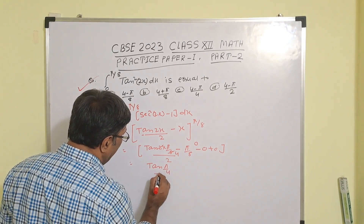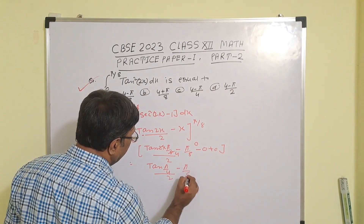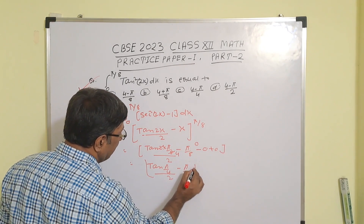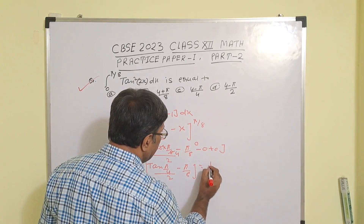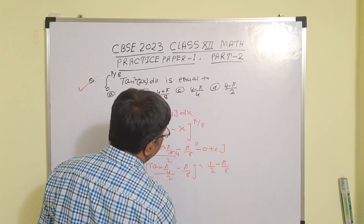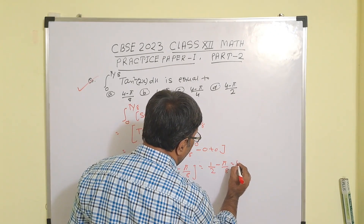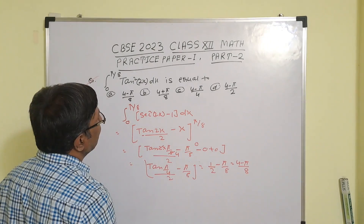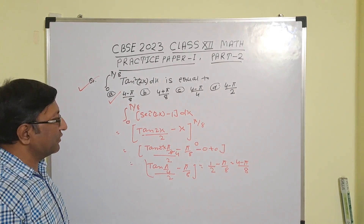This is tan(π/4) by 2 minus π/8. We know tan(π/4) is 1, so this is 1/2 minus π/8. Solving with LCM 8, we get (4 minus π) by 8. So the correct answer is (4 minus π)/8, which is option A.